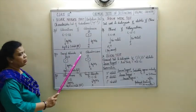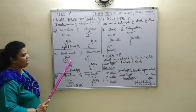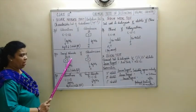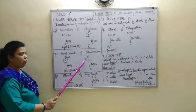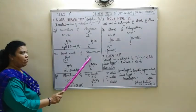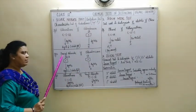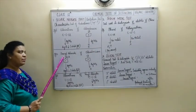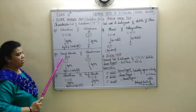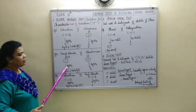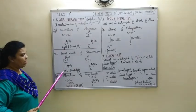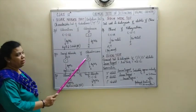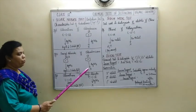Let us move on to another pair: benzyl chloride versus chlorobenzene. The structure of benzyl chloride is C6H5CH2Cl. In chlorobenzene the alpha carbon is in sp2 hybridized state, whereas in benzyl chloride this benzylic carbon is in sp3 hybridized state. So when you add silver nitrate to benzyl chloride you will get a white precipitate of AgCl, and no such observation will be obtained in case of chlorobenzene.